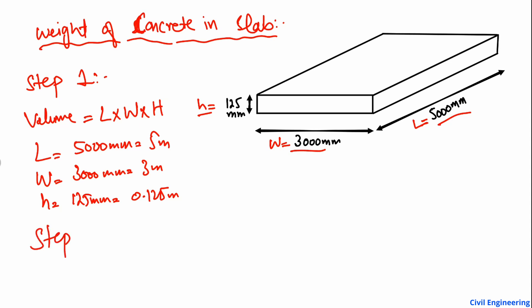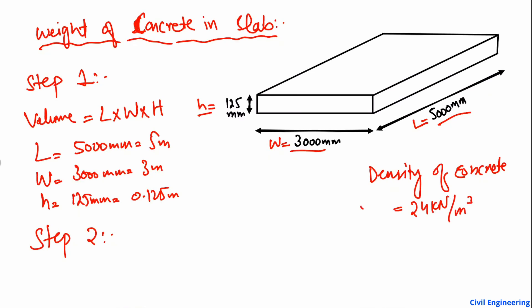The next step is knowing the density of the concrete. Step number two: we know the density of the concrete. This is a standard value and it is 24 kilonewtons per cubic meter — that is the density of the concrete.